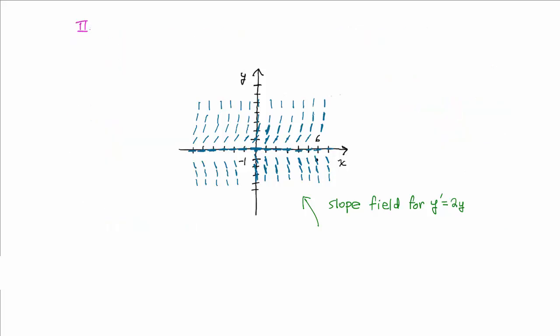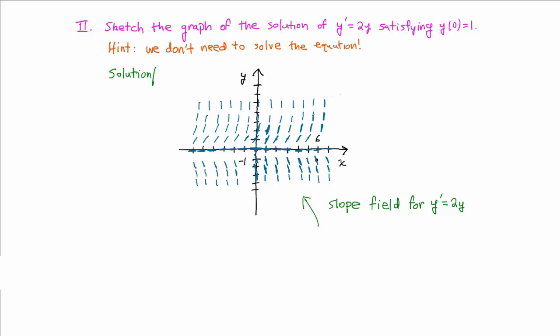In the second part of this video, we'll solve a very quick exercise, which is to sketch the graph of the solution to y prime equals 2y, satisfying y of 0 equals 1. Here's a hint. We don't actually need to solve the equation. Instead, we can use a slope field.